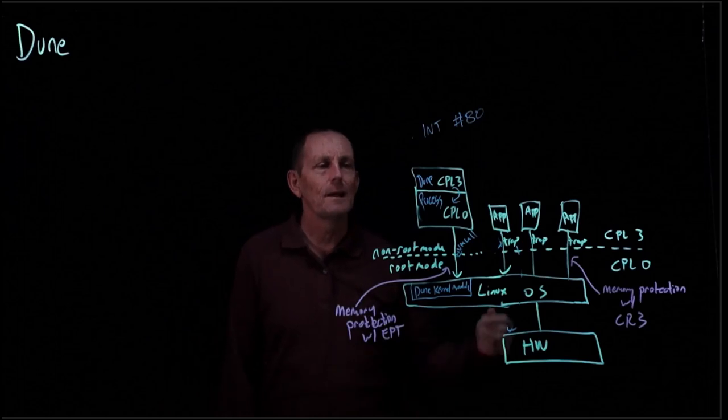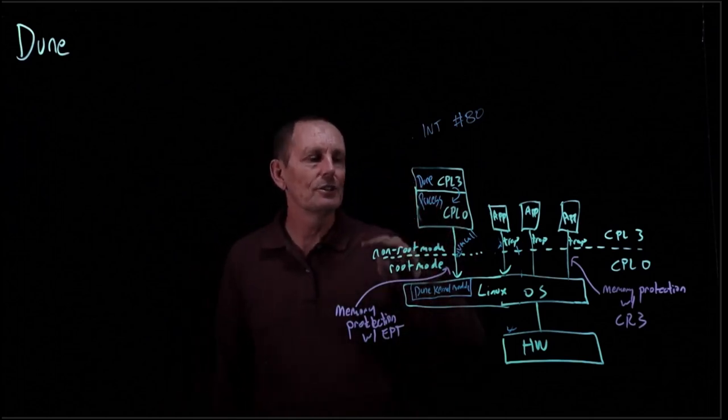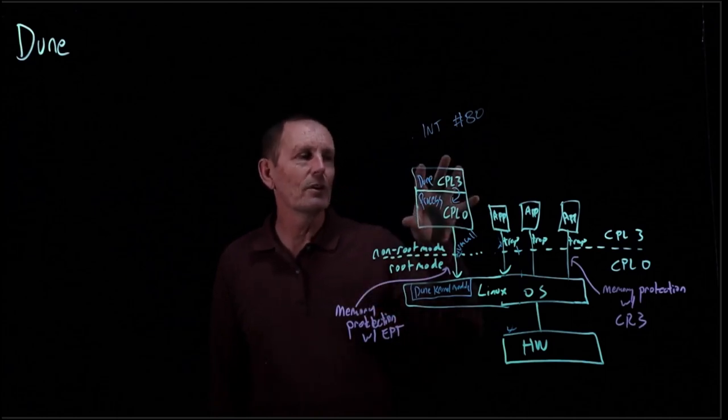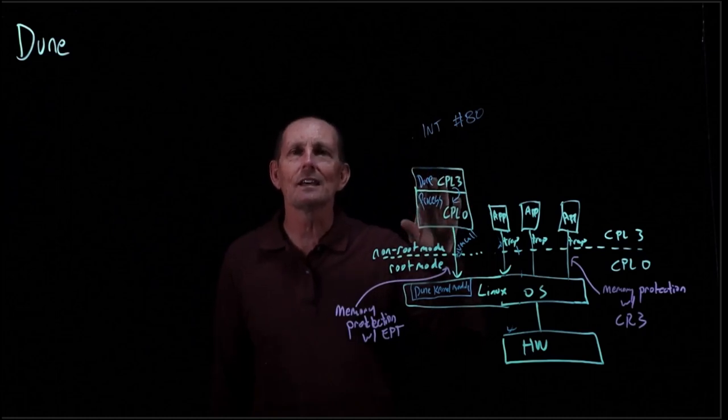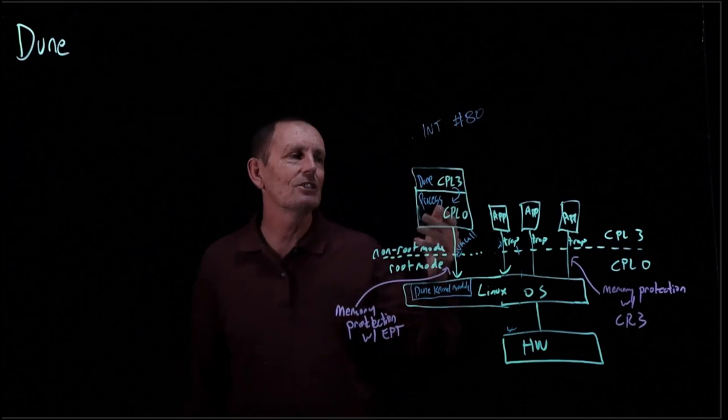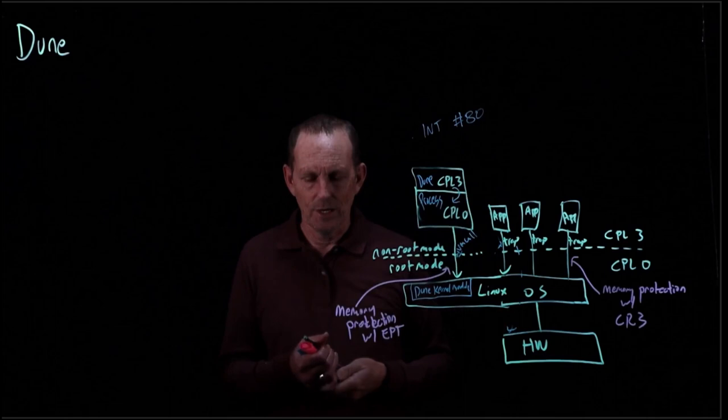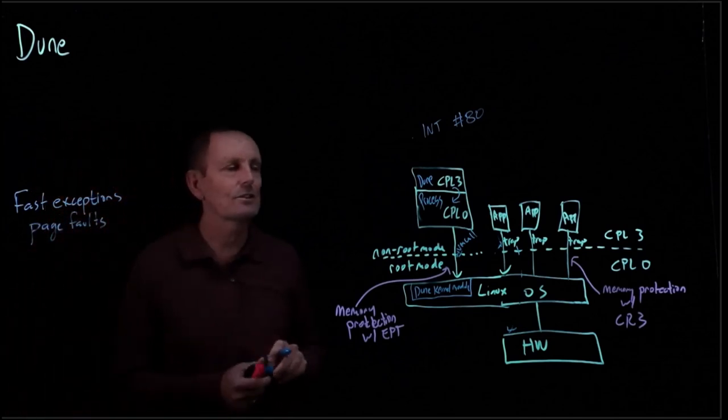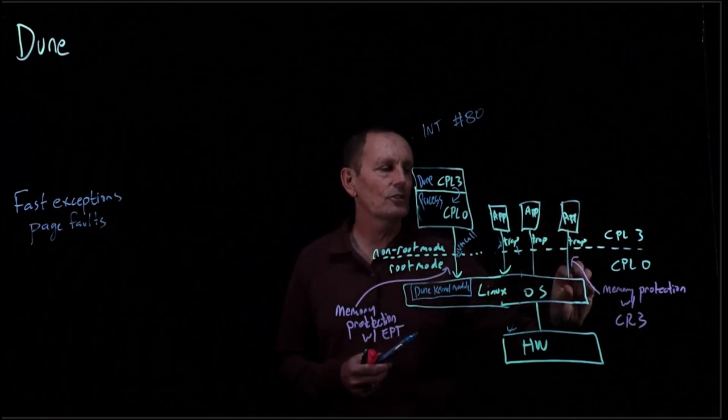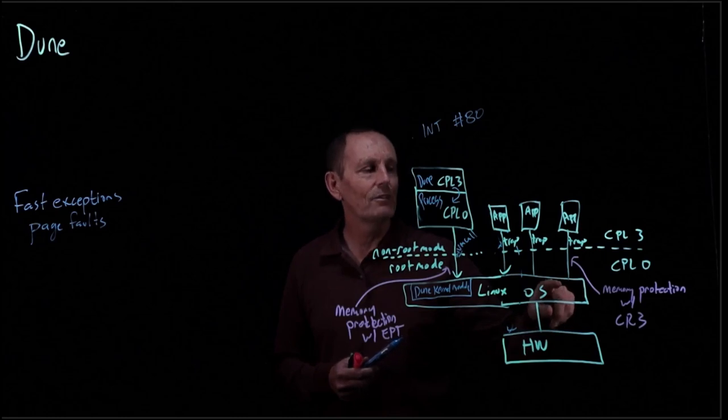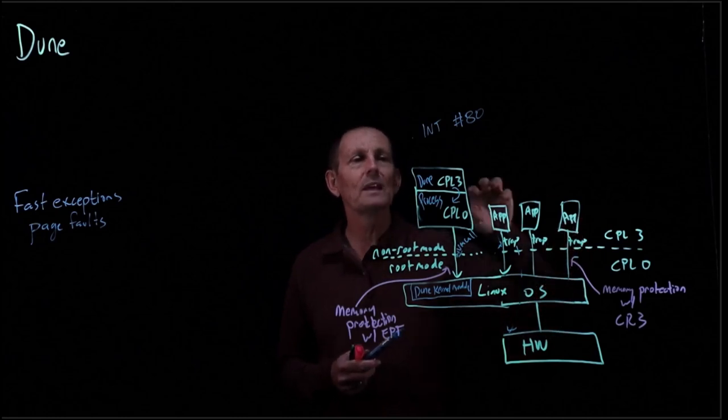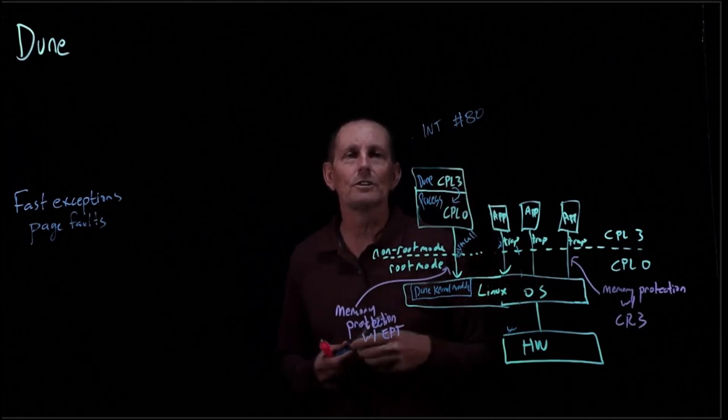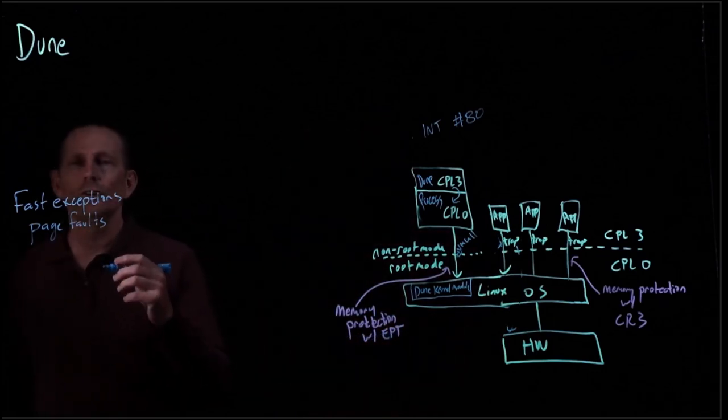But what's important to note is the abstraction that we're providing to this non-root mode piece of code is not an entire virtual machine with its own hardware. Instead, we're providing a souped-up process, because it still has access to all system calls. The difference is it just has access to, for instance, fast exceptions. So let's look at some of the fast exceptions we get. Page faults - why is it faster than before? Because if we have an app over here that gets a page fault, that's going to cause us to go into the CPL0 mode here, then that's going to go and find a general mechanism to send this signal back to this application. Instead, in the DUNE process, we're going to just get a page fault exception right into here, and we can just deal with it however we want to deal with it.